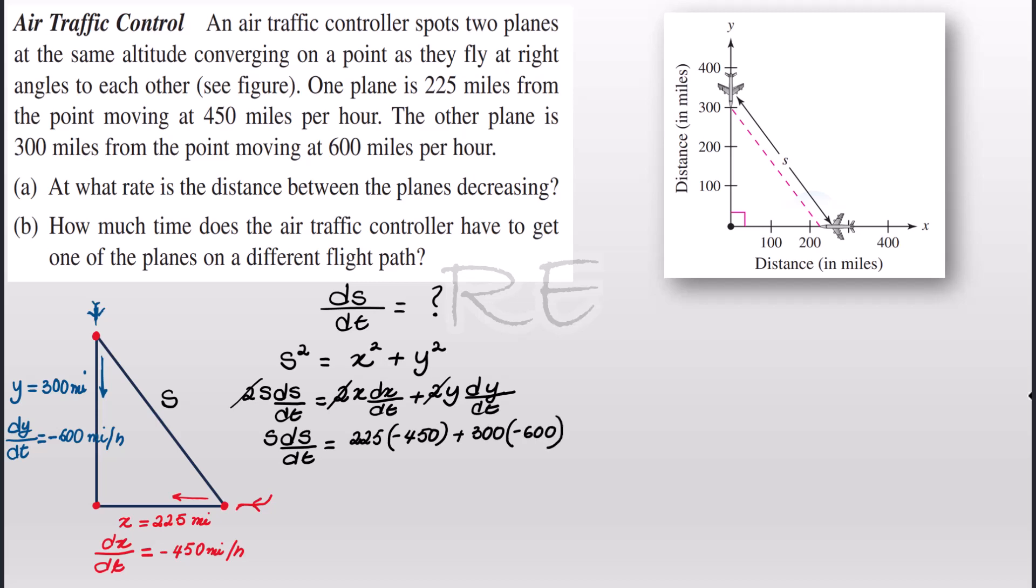So s ds/dt will be equal to negative 101,250 plus 180,000. Now the total is going to be negative 281,250. Well we don't know what s is.